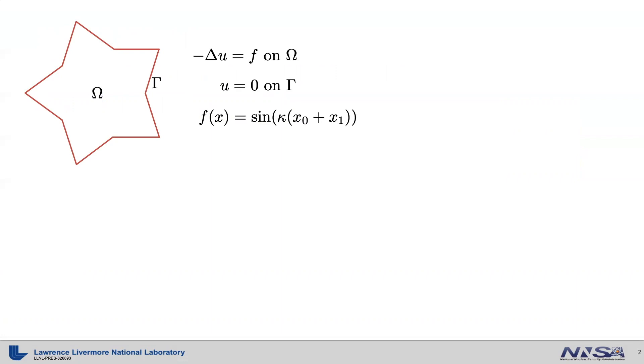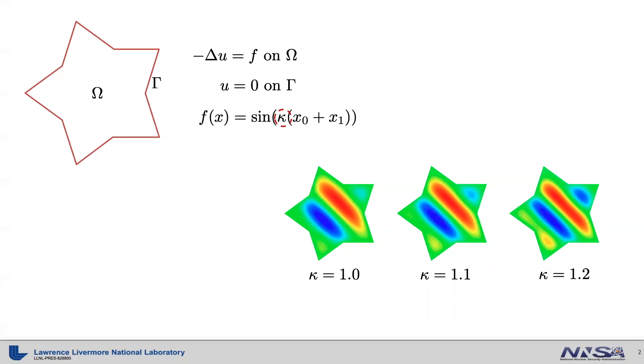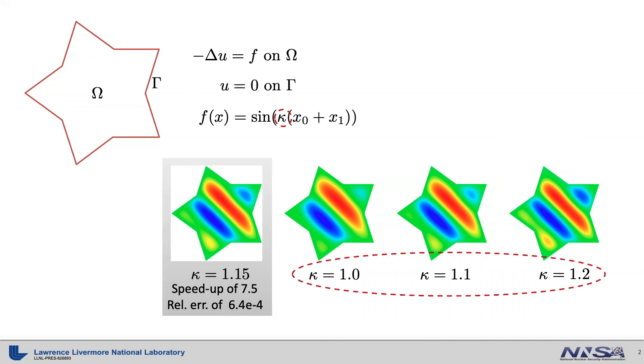For example, for the Poisson problem we have looked at in the previous tutorial, we sampled the frequency of the sinusoidal function at kappa equals 1.0, 1.1, and 1.2, then used this simulation data to build a reduced order model, which is used in turn to predict the solution at a new parameter point, for example, kappa equals 1.15, with a speedup of 7.5 and relative error of 6.4 times 10 to the negative 4.